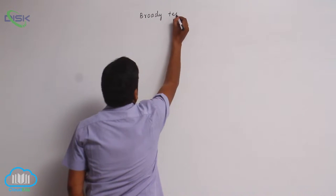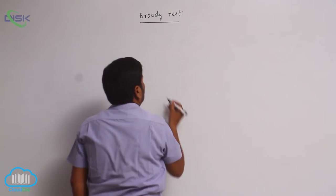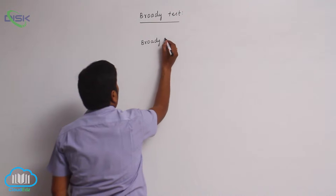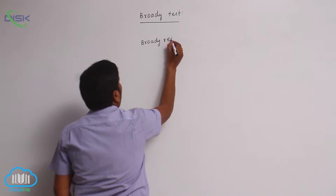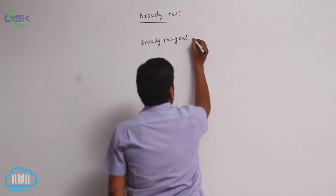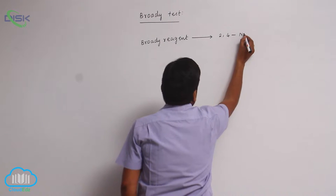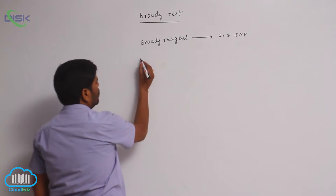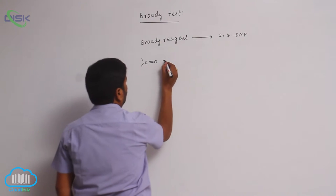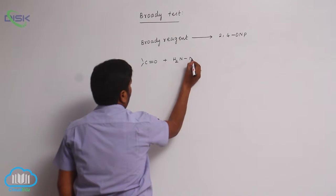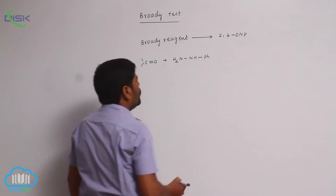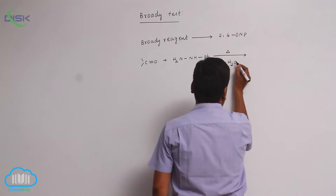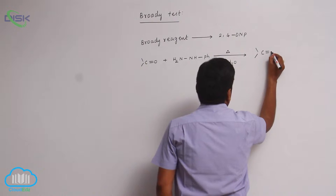Brady's test. Brady's reagent is 2,4-DNP, 2,4-dinitrophenylhydrazine. The carbonyl group C=O reacts with H2N-NH-phenyl group on heating, and loss of a water molecule takes place, forming C=N bond.